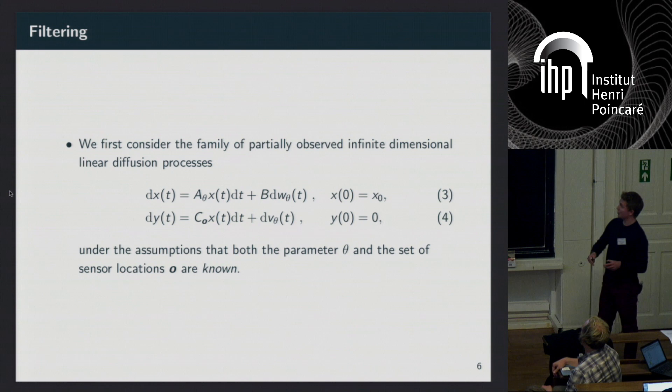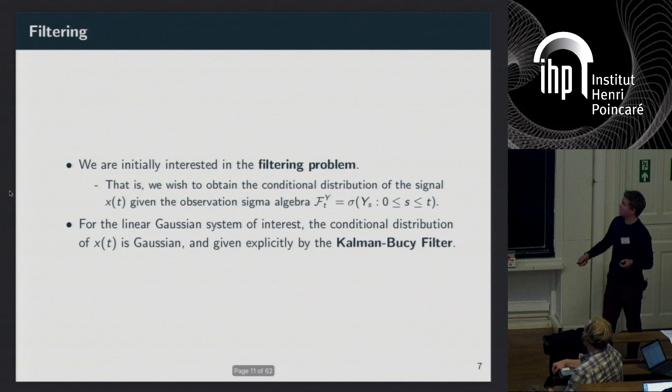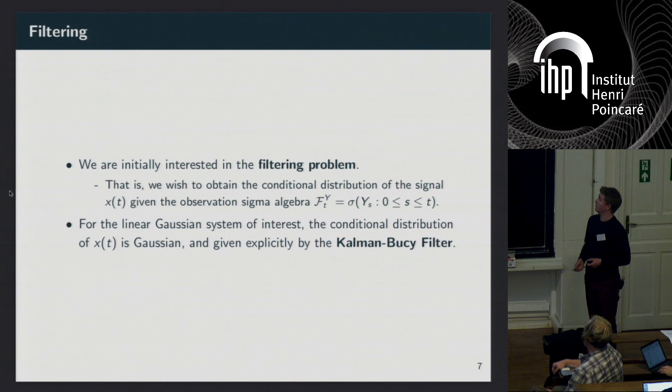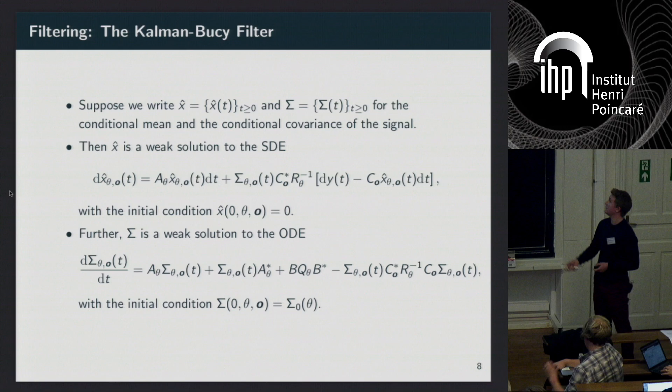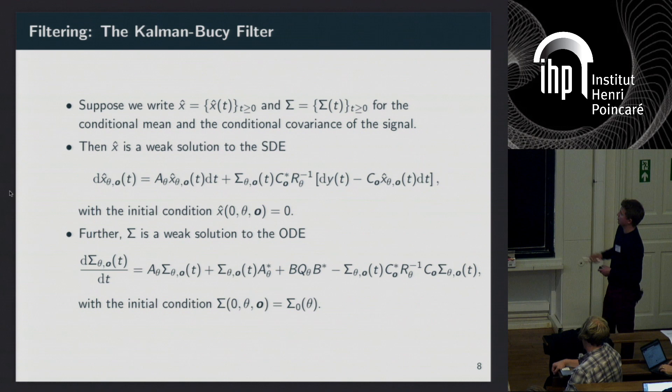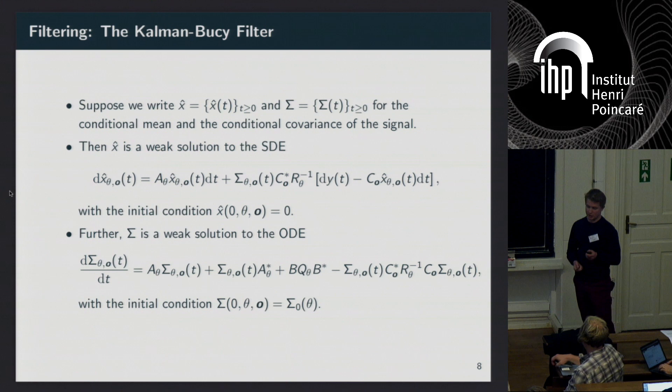If we assume that both the parameters and the sensor locations are known, filtering for this system is very well understood — given by the Kalman-Bucy filter in the continuous case. We know the posterior distribution of the latent signal is Gaussian, and in particular the posterior mean and the conditional covariance evolve according to an SDE and a Riccati equation. Both of these obviously depend on the set of parameters and the set of sensor locations.